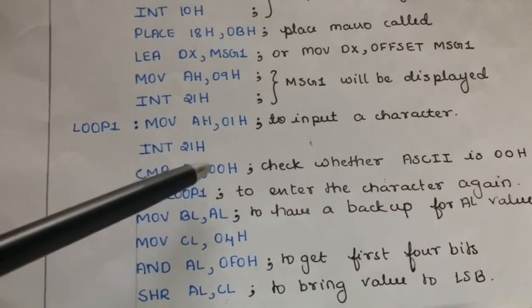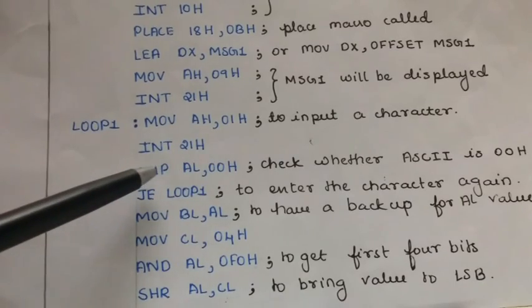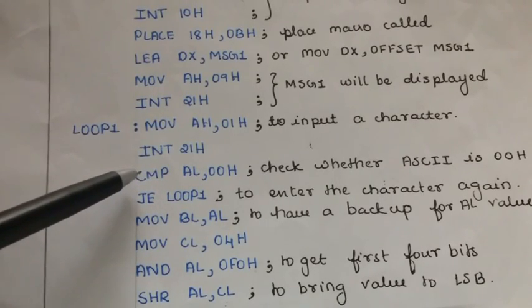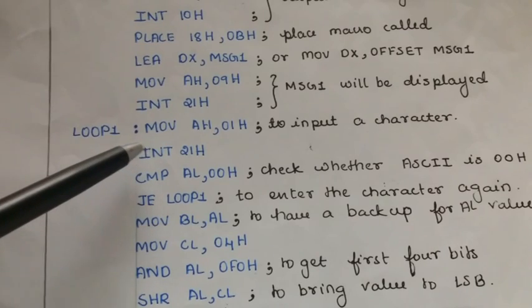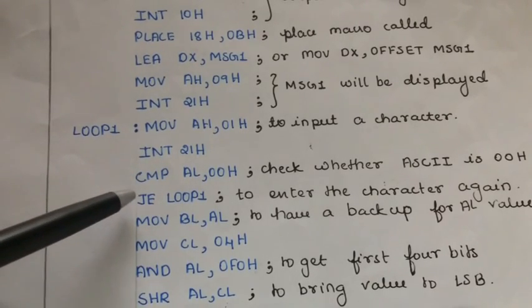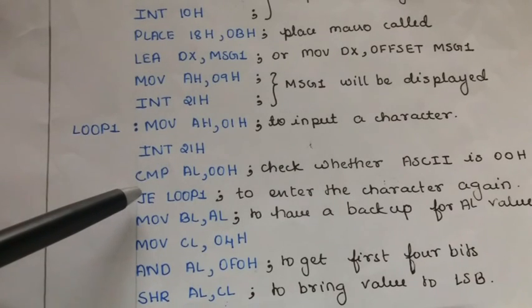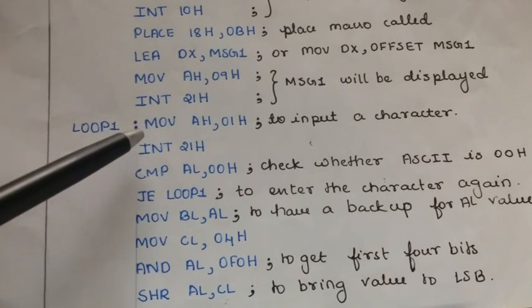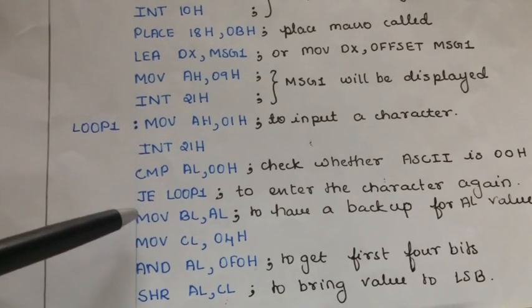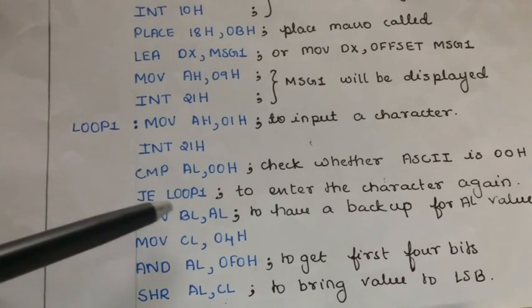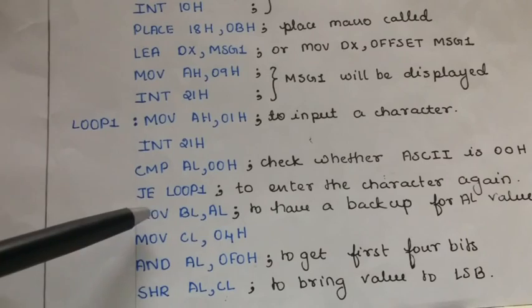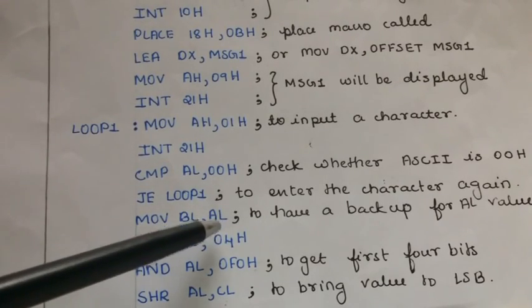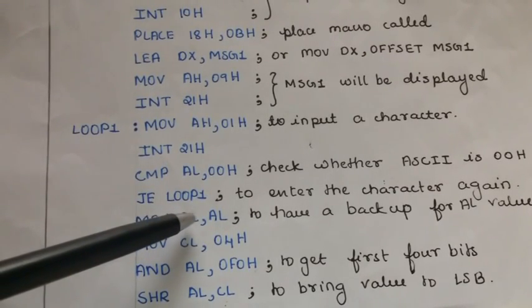Compare al,00h. Here, we are comparing whether the ASCII value of the inputted character is 0. This particular instruction i.e. compare, it performs subtraction operation internally. If the ASCII value of the inputted character is 0, then it will go back to the loop 1 i.e. it will not proceed with the other execution until one more character is read. If it is not 0, it continues further. Move bl,al. This we are doing because we might require the original value stored in al in the later cases. So, we need to keep a backup for the original value of al. Here, bl register acts as a backup for the value in al.